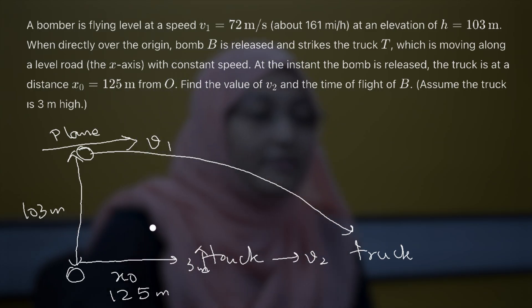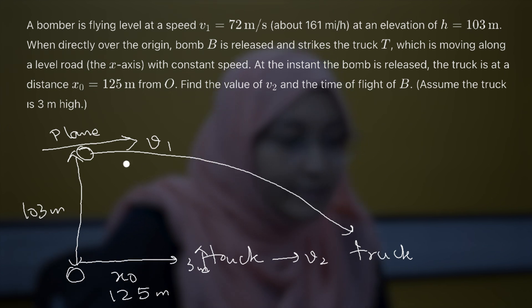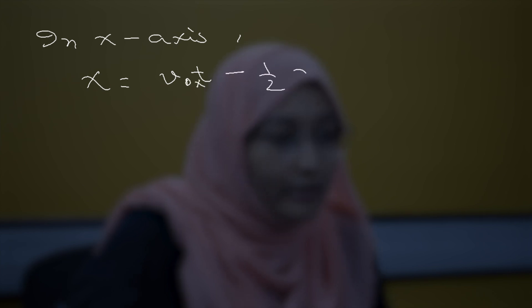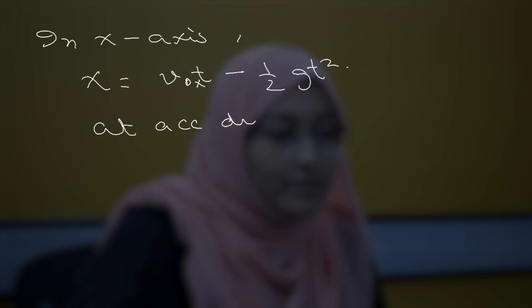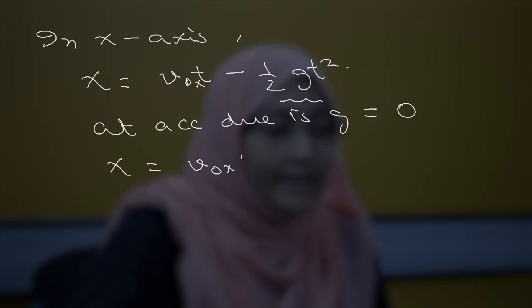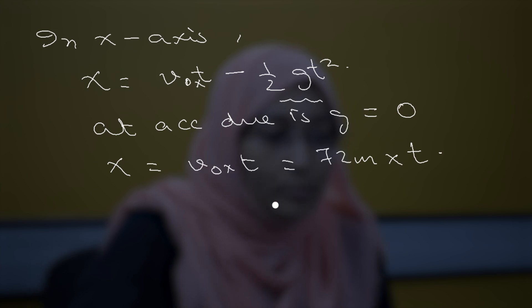As we have visualized, the bomb is striking the truck. Now let's begin solving. Since projectile motion takes place both in the x-axis and y-axis, let's take the equation of motion for each. In the x-axis, the equation of motion for the bomb is x equals v0x·t minus half·g·t². Since acceleration due to gravity is zero in the x-axis, that term is zero, so x equals v0x·t, which gives x equals 72t meters.